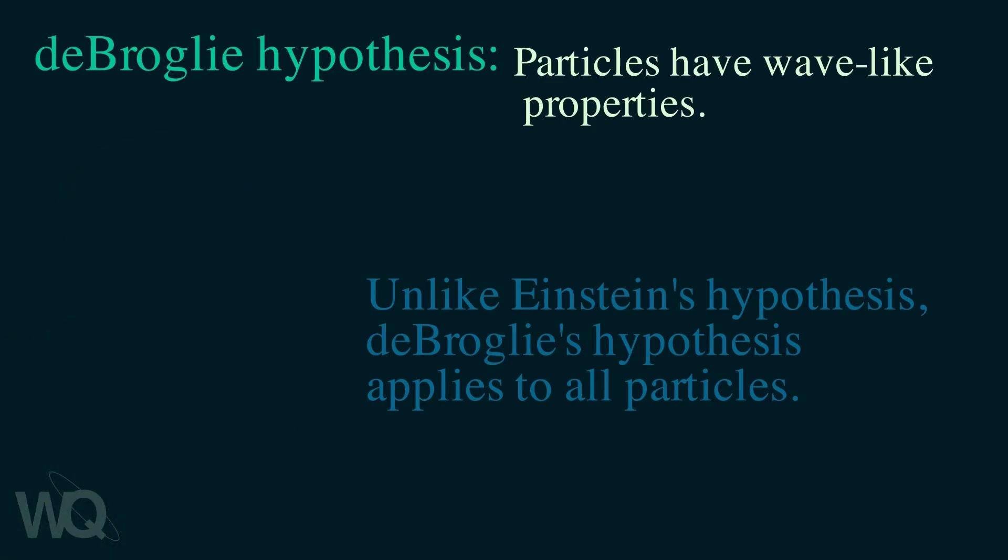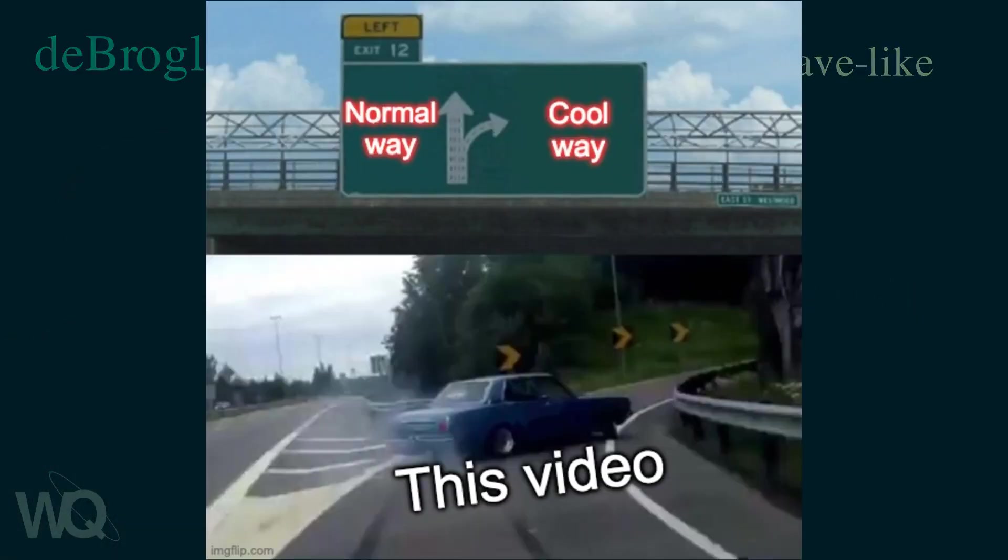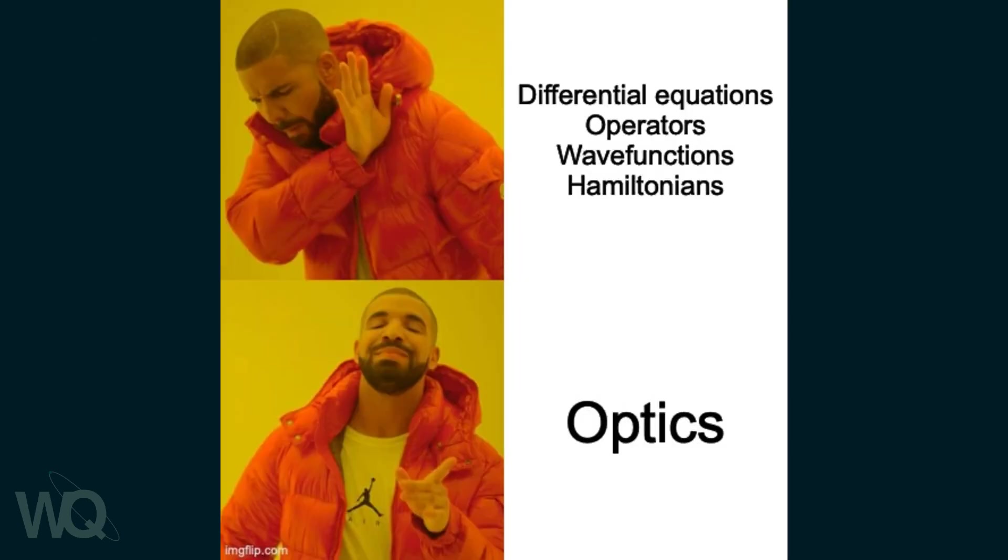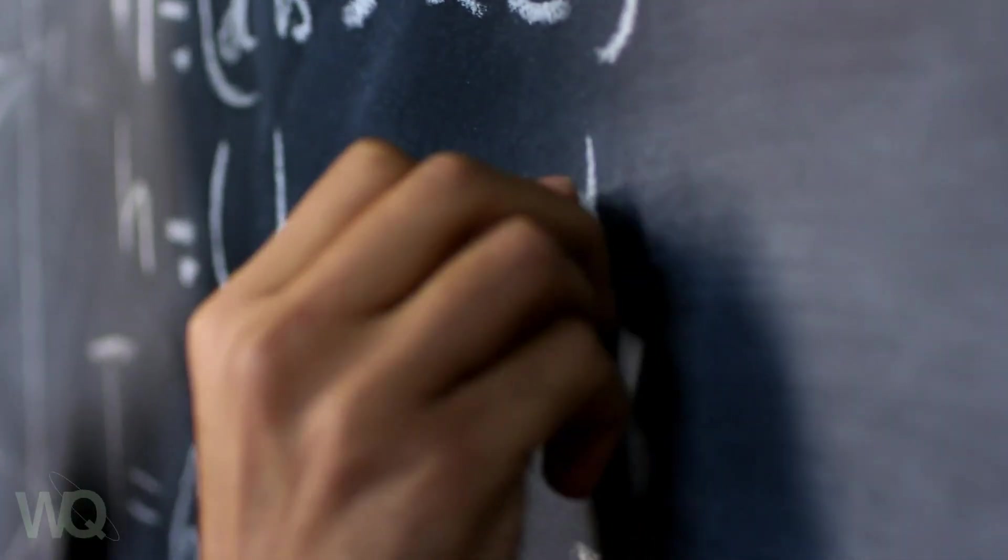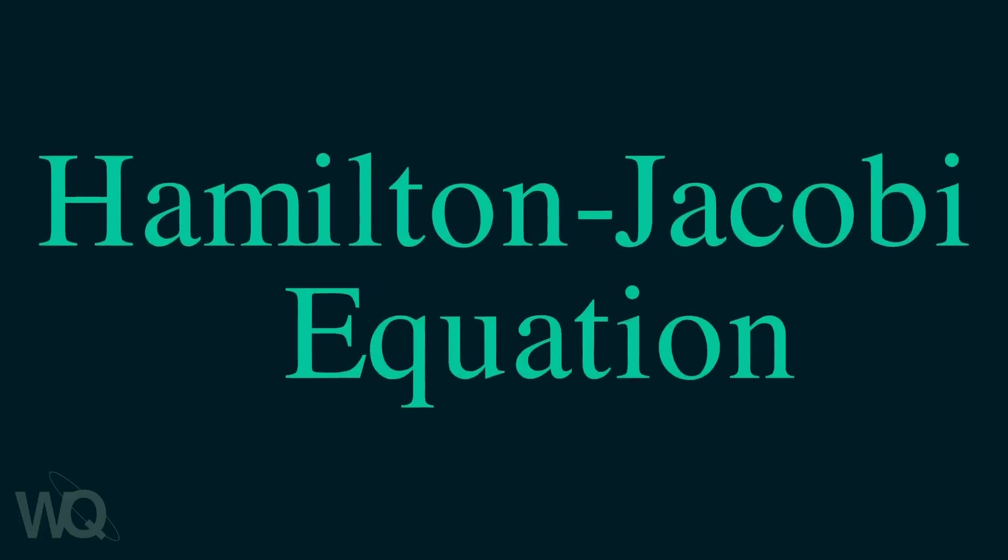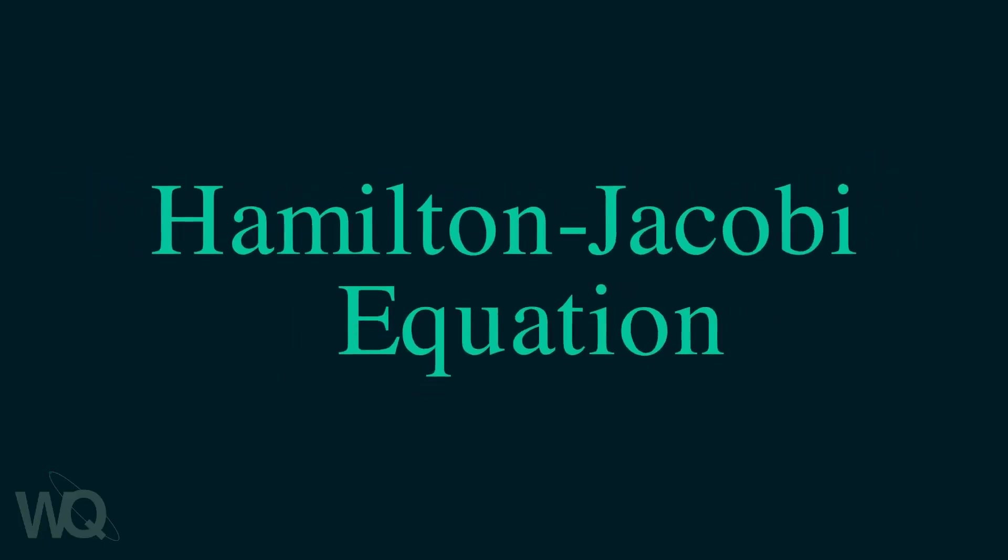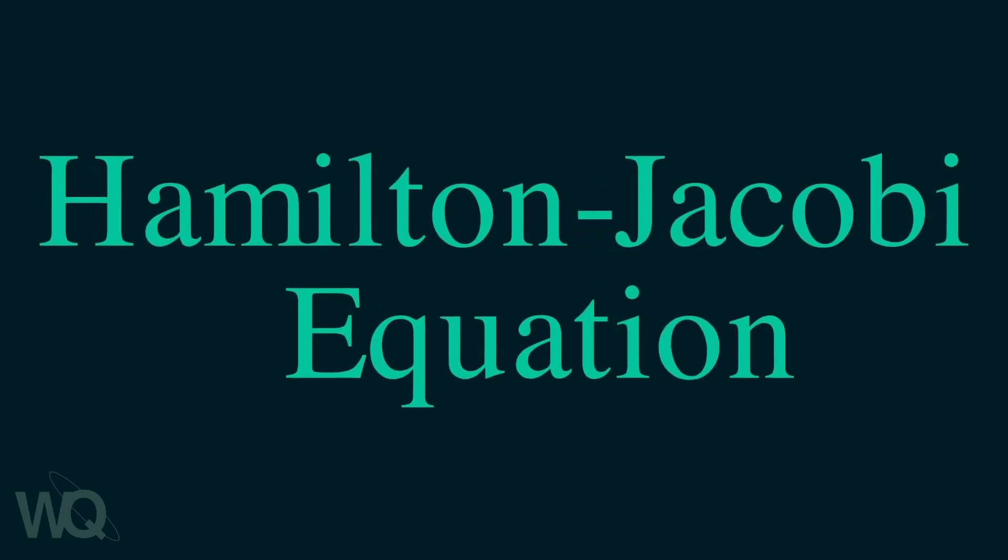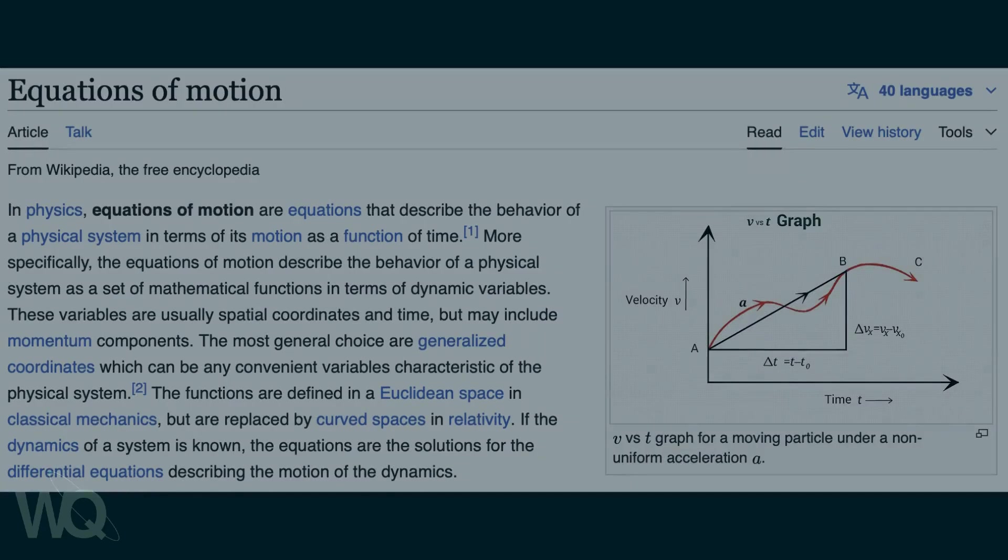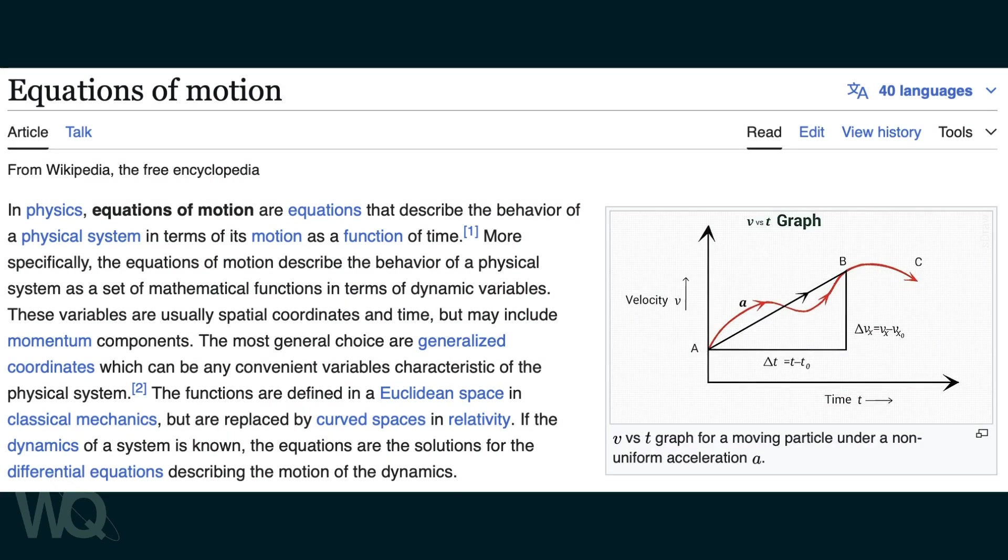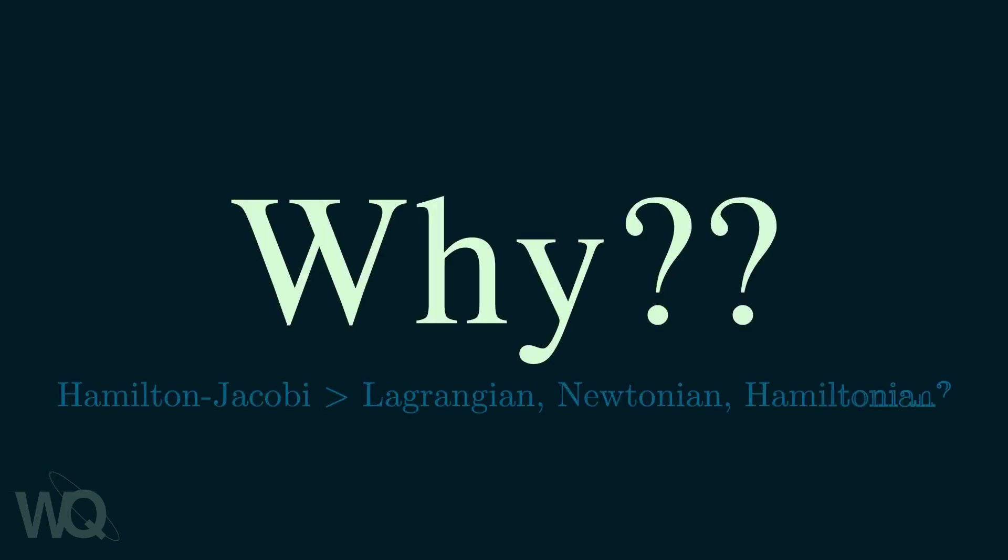This is where we will deviate from most other explanations of the Schrödinger equation found on the internet and we'll actually talk about optics for a second. Here's why it's important. When deriving this equation, Schrödinger started with a somewhat unusual formulation of classical physics known as the Hamilton-Jacobi equation. This equation gives us the equations of motion quite like the Newtonian or Hamiltonian mechanics. But why did Schrödinger use this exact formulation of classical physics?